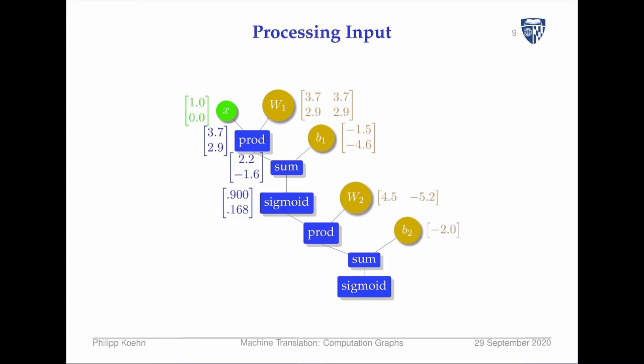Here we have the sigmoid. The sigmoid of 2.2 is approximately 0.900, and the sigmoid of minus 1.6 goes to 0.168. To remember, one of the big motivations of using functions like sigmoid is that it takes inputs ranging from minus infinity to plus infinity and puts them into a range of 0 to 1, which allows more manageable calculation and has the behavior that values in the middle matter most. For instance, the sigmoid of a million and the sigmoid of a billion are not all that different.